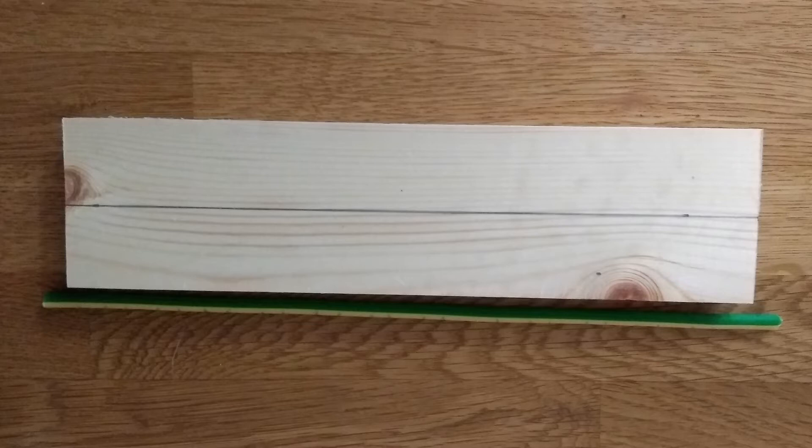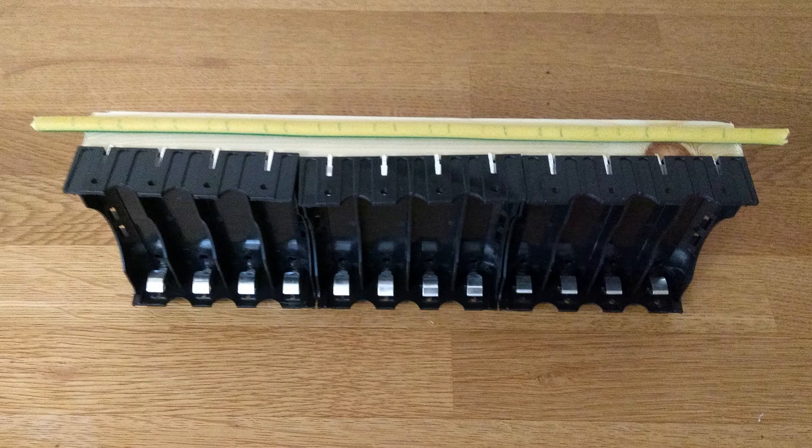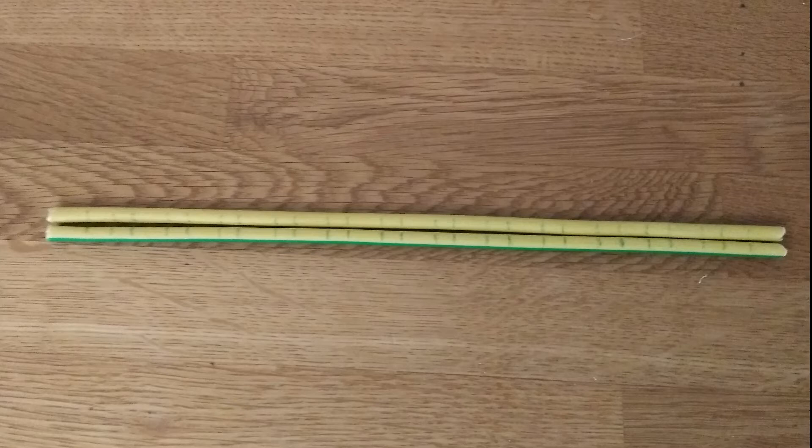Two lengths of bus wire were cut, one for the positive and one for the negative. They were long enough to protrude from the spine at each end, the idea being that I could connect many blocks together using chalk blocks. The sheathing was then marked up with the positions of the cell holder tabs. These sections of sheathing were then removed with the knife to expose the wire beneath, ready for soldering.